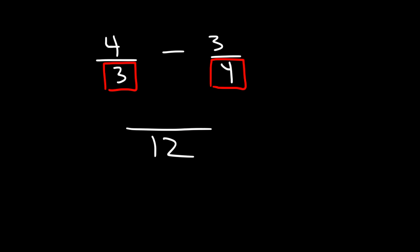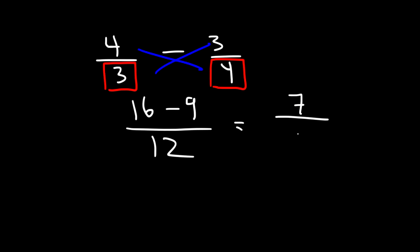And then cross multiply. 4 times 4 is 16, and 3 times negative 3 is negative 9. Now 16 minus 9 is 7, so the answer is going to be 7 divided by 12.